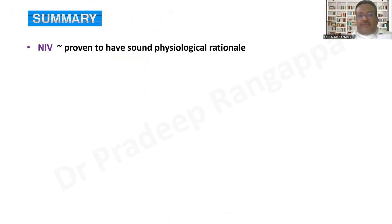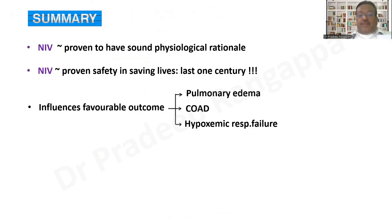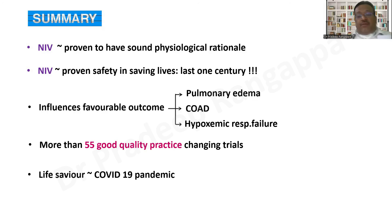In summary: NIV has a proven, sound physiological rationale — it acts on elastic, resistive, and threshold pressures to overcome alveolar opening pressure. NIV has a proven safety record for over a century since its introduction in the 1920s. There are at least 55 high-quality, practice-changing trials demonstrating favorable outcomes in pulmonary edema, COPD, and hypoxic respiratory failure.